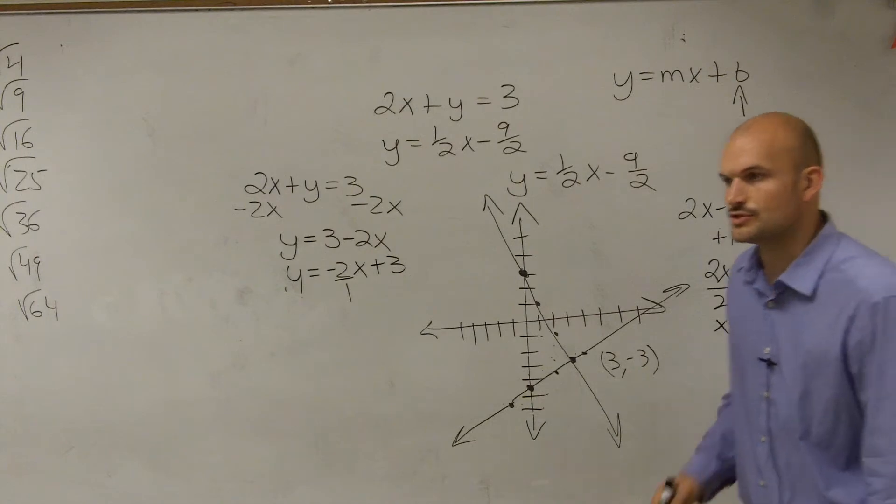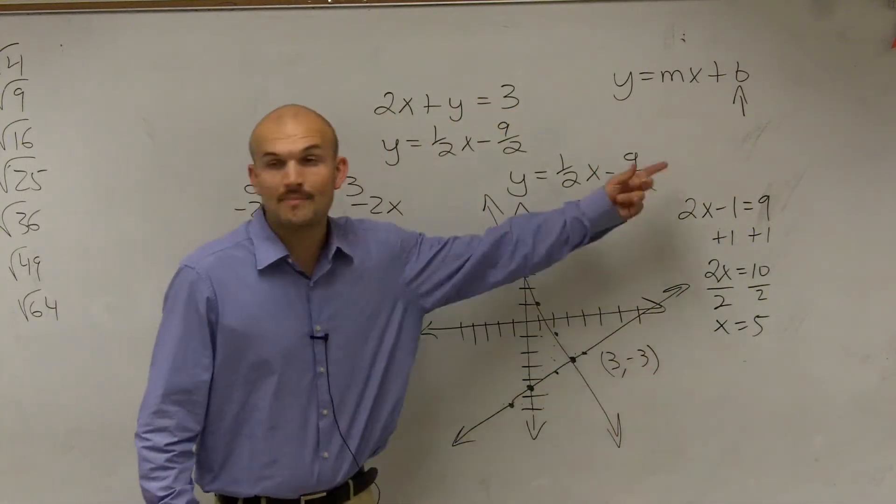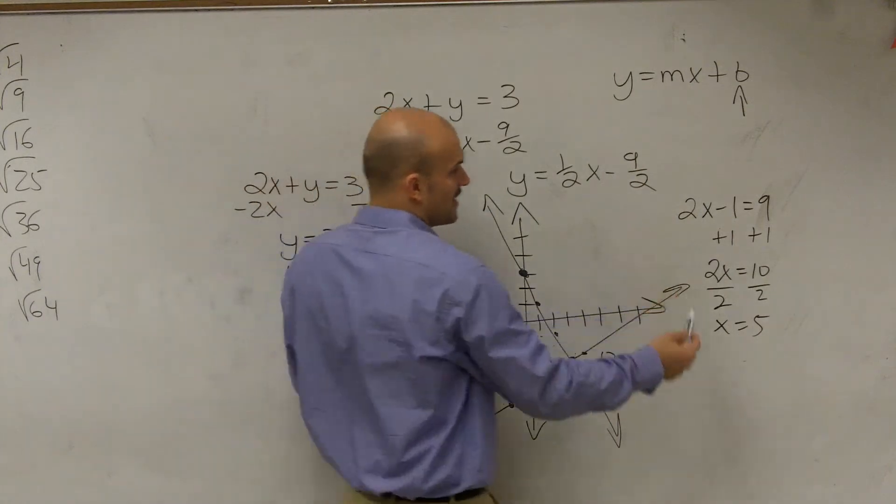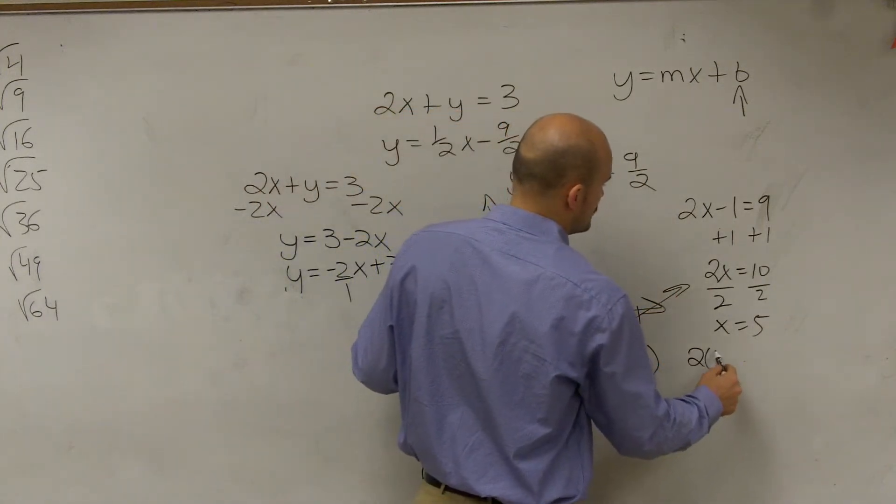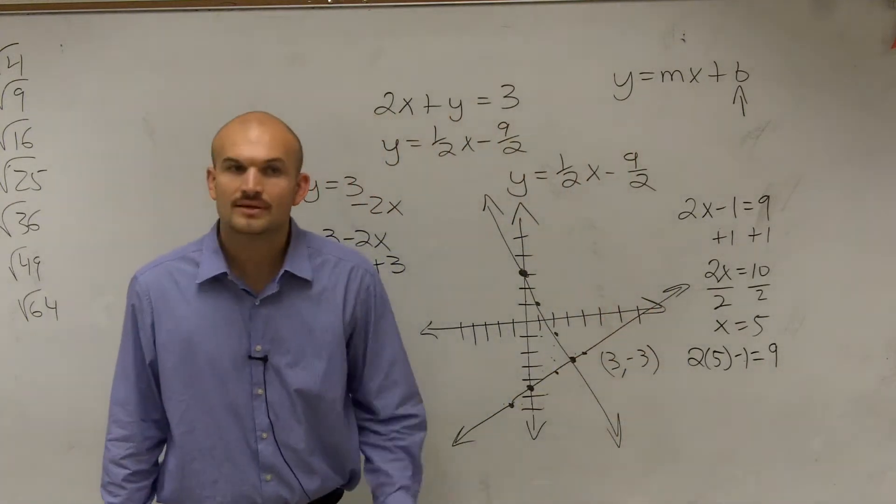Now, how did we know x was the true solution? What was the way to double check that? You could plug it back in, right? So when you plug back 5 in there, 2 times 5 minus 1 equals 9. Is that true? Yes.